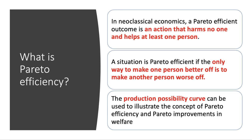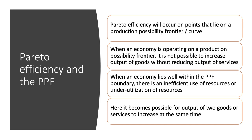In neoclassical economics, a Pareto efficient result or outcome is any action that harms no one, but it helps at least one person. We reach Pareto optimality or Pareto efficiency if the only way to make one person better off is to make somebody else worse off. We can use the production possibility curve or the production possibility frontier to illustrate the concept of Pareto efficiency and also a Pareto improvement in welfare.